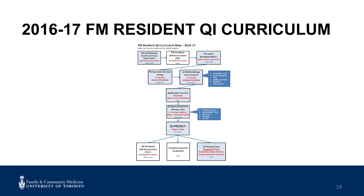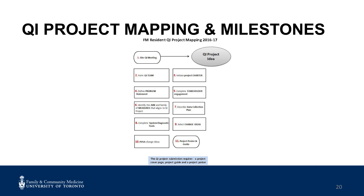This is a visual of the QI curriculum. The lightly shaded boxes represent key elements of the curriculum. This is also a visual of the QI project elements that are required. Completing a QI project provides you with application experience, which is key in learning this content. A project guide has been developed to support your application or QI project journey and is available online or in hard copy.